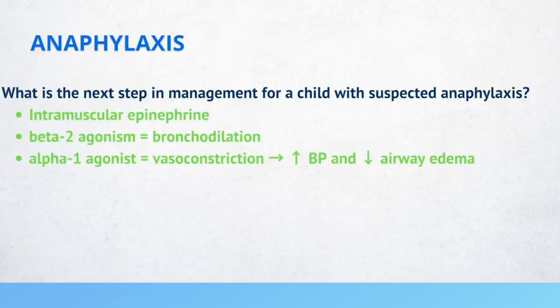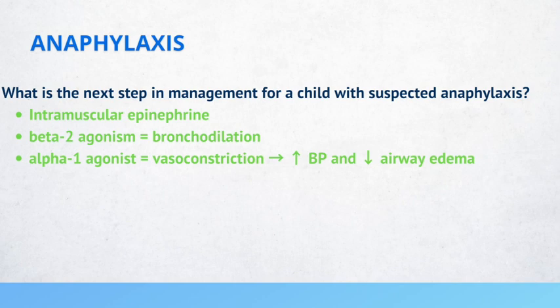What is the next step in management for a child with suspected anaphylaxis? Intramuscular epinephrine. Recall that epinephrine has effects on both the alpha and beta receptors. The beta-2 agonism will cause bronchodilation, while alpha-1 agonism will cause vasoconstriction, which leads to increased blood pressure and decreased airway edema. This is definitely one way that examiners like to test you on these receptors.